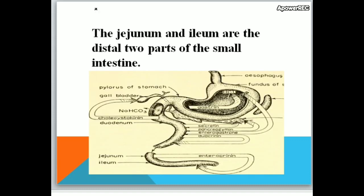The jejunum and ileum are the distal two parts of the small intestine. Duodenum, jejunum, and ileum are all parts of the small intestine. The duodenum is the upper portion, while the jejunum and ileum are the lower portions of the small intestine. You can also see the gallbladder, stomach, gastrin, and HCl juices inside the stomach. The esophagus is the food pipe.